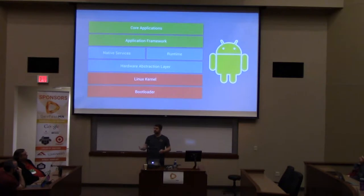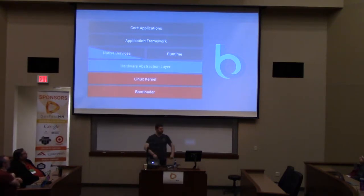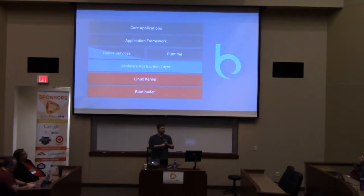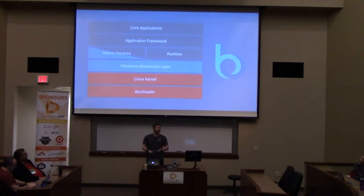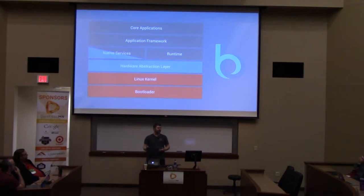Brillo is Android-based, so what does the Brillo stack look like compared to Android? Basically, all of that Java stuff is gone. There's no runtime, there's no framework, and all those core applications that run on top of that stuff have been removed from the system. This makes it extremely lean, but it also means that all those familiar SDKs that application developers are used to don't exist.